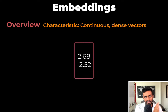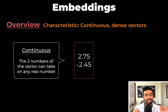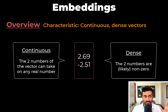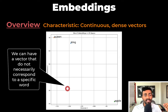Embeddings are continuous dense vectors. Continuous means that the values of the vector can take on any real number in theory, and dense means that these values are likely non-zero. So with this characteristic, we can have vectors that don't even necessarily correspond to a specific word.